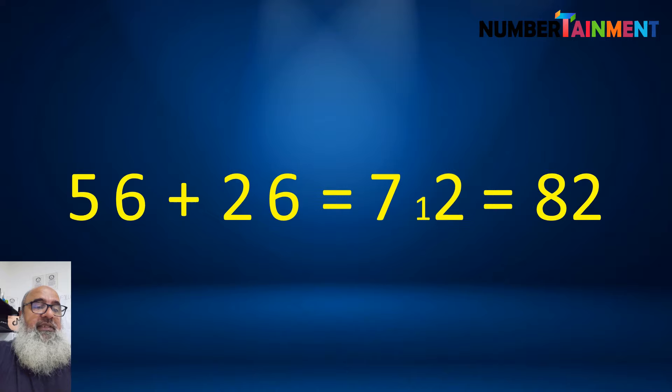We can also write this like this: 56 plus 26 is equal to 82. And this 12, we write it like this, just to show that the 1 in the 12 has to be carried to the left.